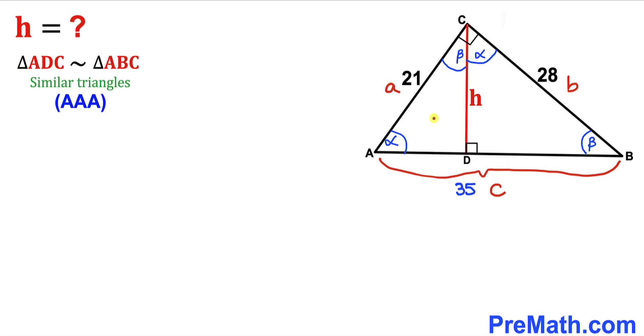Then we conclude that this right triangle ADC, the smaller one, is a similar triangle to this big triangle ABC according to angle-angle-angle similarity theorem.